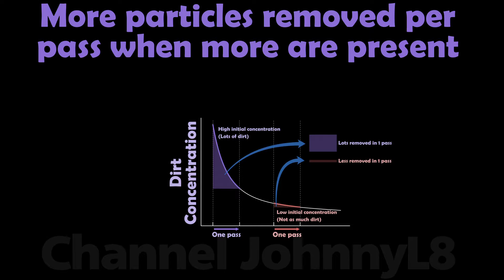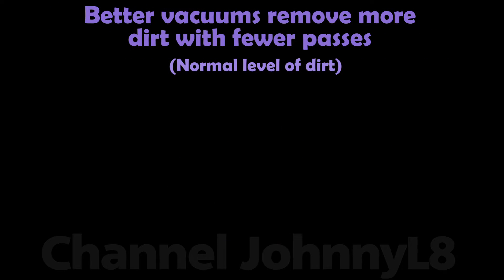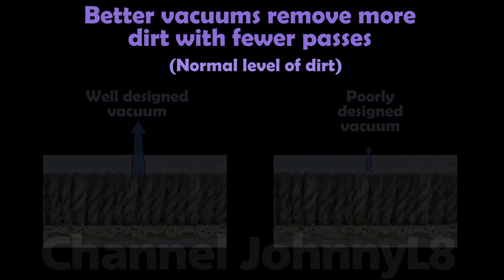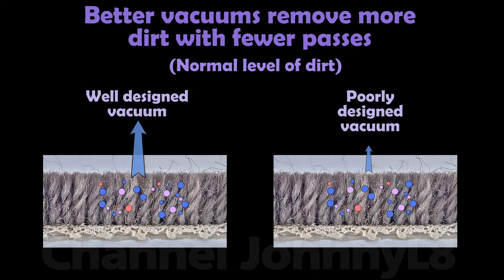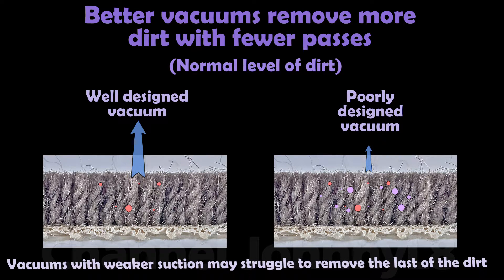How much dirt is removed in a pass for a fixed initial particle concentration does depend on the effectiveness and design of the cleaner head, particularly at lower concentrations. Better performing vacuums achieve a greater particle concentration reduction from a fixed initial concentration in fewer passes. Once dirt is loosened and exposed in the pile, it's the vacuum's suction power that determines the air flow through the pile to remove those particles effectively. Vacuums with weaker suction may struggle to reduce the concentration of dirt that's not near the surface.